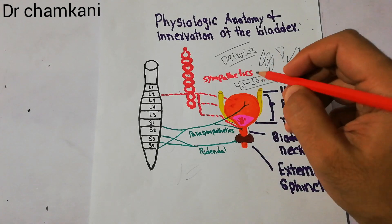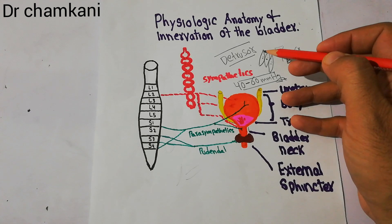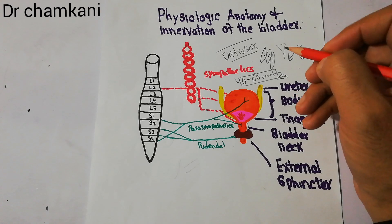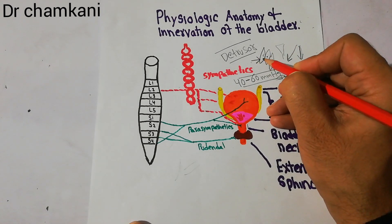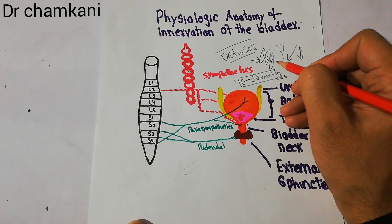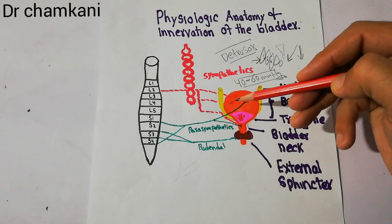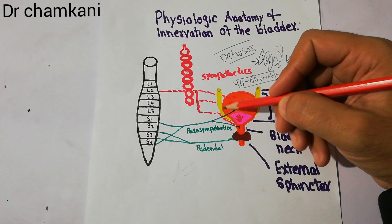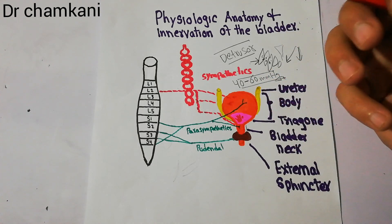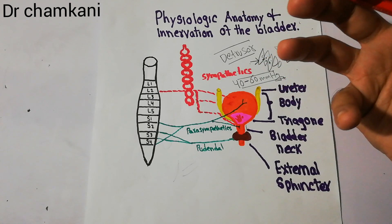The detrusor muscles of the urinary bladder are made of cells which are connected with each other in such a way that they have very low resistance for any action potential. So any action potential entering one cell can easily spread to the second, third, fourth, and fifth cell without much resistance. Once any nerve signal excites the bladder, the action potential can spread throughout the body and neck of the bladder, the whole bladder contracts simultaneously, and this basically helps in the micturition process.